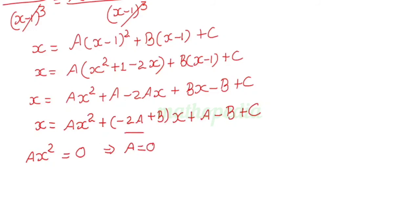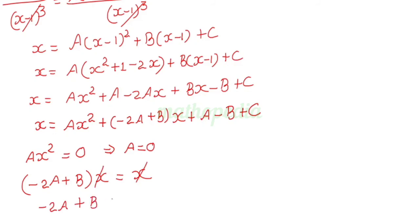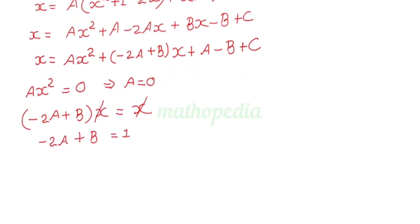Next, equating the x terms on both sides: we get (minus 2A plus B) into x equals x on the left side. Cancelling x, we get minus 2A plus B equals 1. Already we have A equals 0, so minus 2 into 0 plus B equals 1, giving B equals 1.